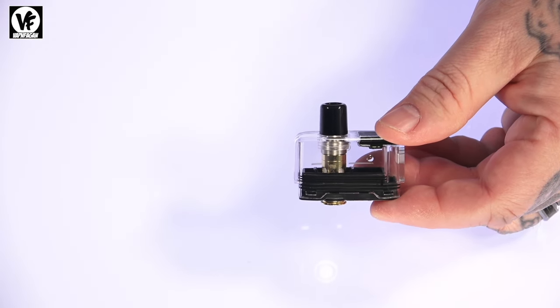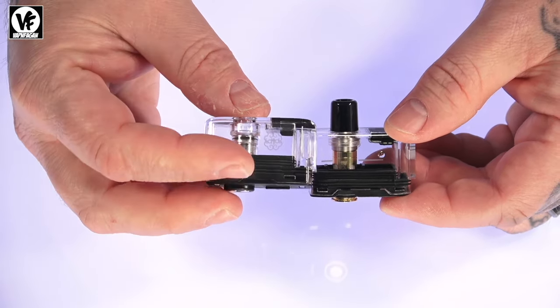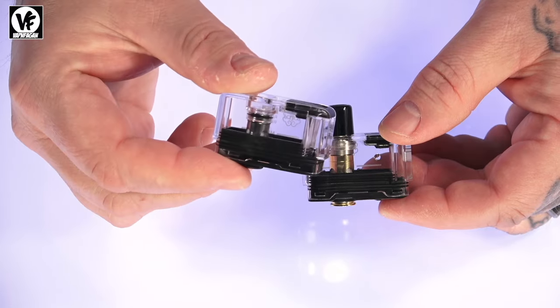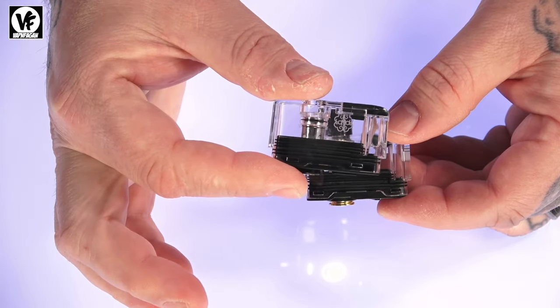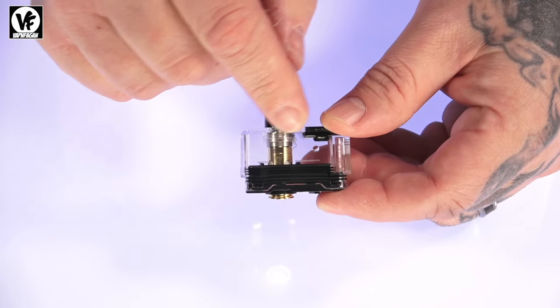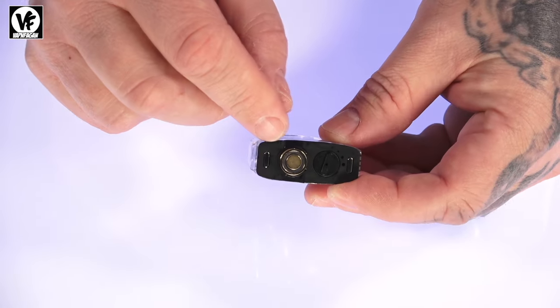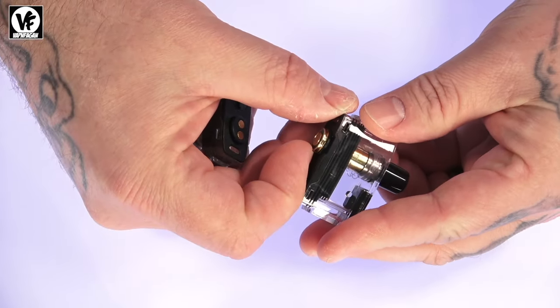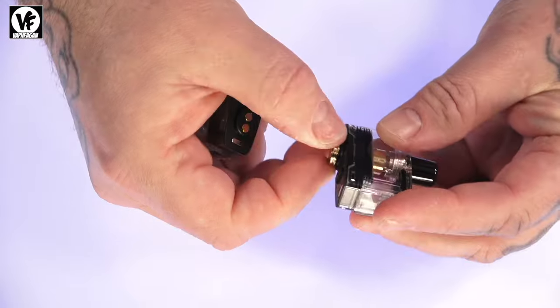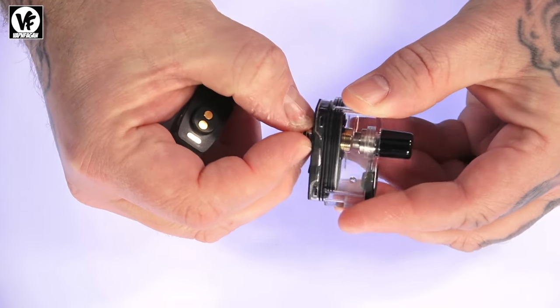Each pod holds up to 5ml of liquid. You're going to get two - this one is sealed, meaning the coil is sealed inside, so once the coil goes bad you're going to toss this out. Then we have the replaceable coil head. When the coil goes bad, you can actually pull the coil head out.